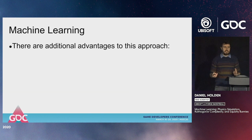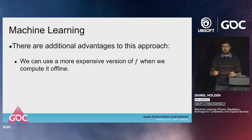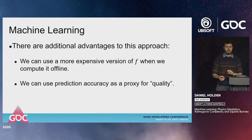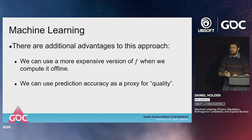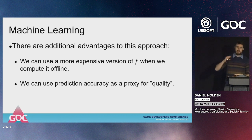There are nice additional advantages to this approach. We can use a more expensive version of the function when computing offline to achieve maximum quality. We can also use our prediction accuracy as a proxy for quality: if we assume we have a perfect high-quality function, we can measure how well we're approximating it as a measure of quality.